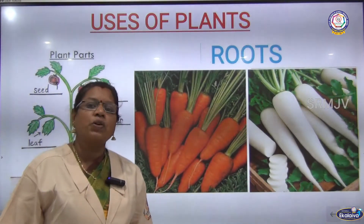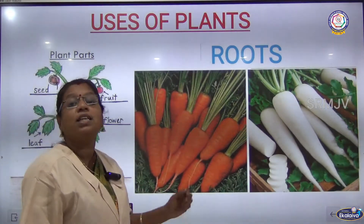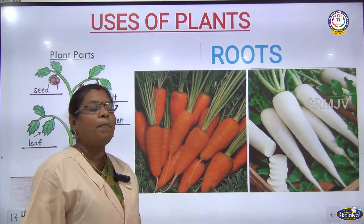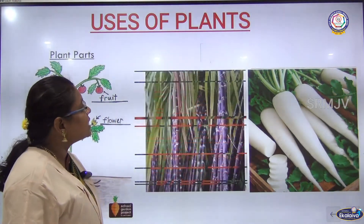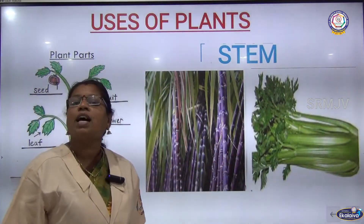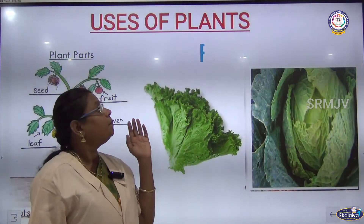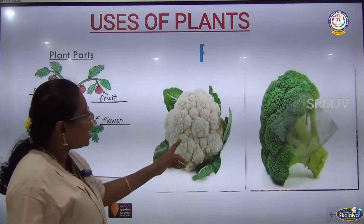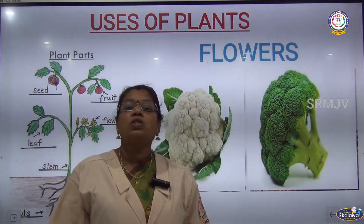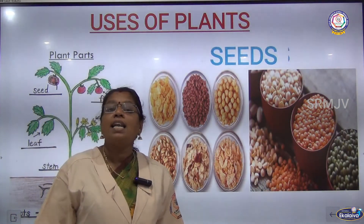Plants are very useful to us — we eat all parts of the plant. For roots, we eat carrot and radish. We eat the stems of sugarcane. We eat cabbage and lettuce as leaves. We eat cauliflower and broccoli as flowers. We also eat cereals and pulses as seeds.